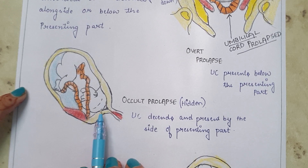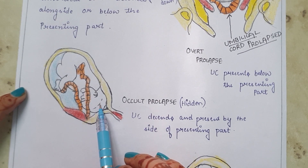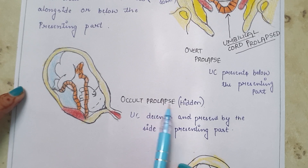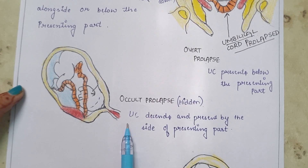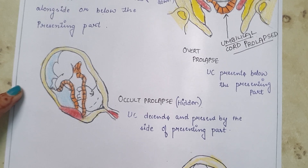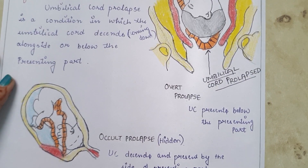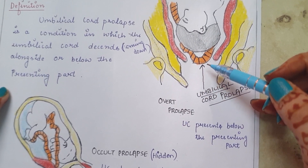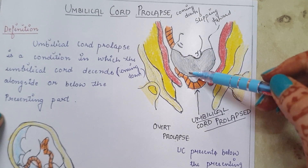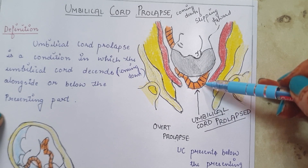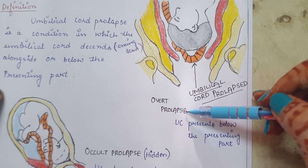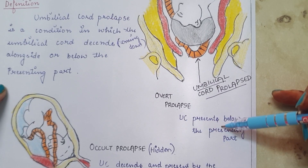In the diagram, when the umbilical cord is present alongside or by the side of the presenting part, that is known as occult prolapse, also known as hidden prolapse — the umbilical cord descends and is present by the side of the presenting part. On the other hand, when the umbilical cord lies below the presenting part (shown in orange), that is known as overt prolapse — the umbilical cord presents below the presenting part.